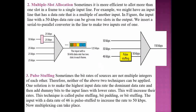In multiple slot allocation, it is sometimes more efficient to allocate more than one slot in a frame to a single input line. For example, an input line with a data rate that is a multiple of others can be given two slots in the output. A serial-to-parallel converter is inserted in the line to handle this. In pulse stuffing, when bit rates of sources are not multiples of each other, neither of the above techniques can be applied.